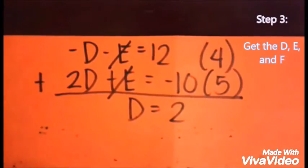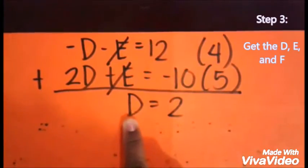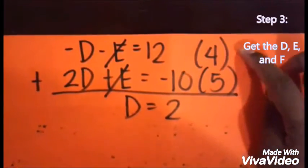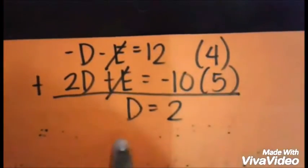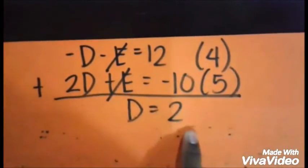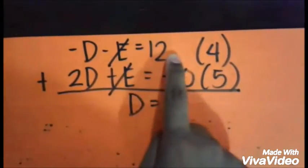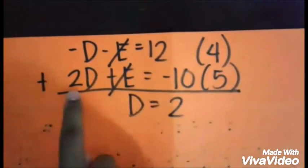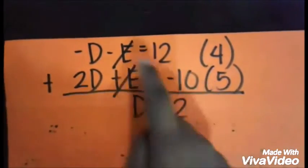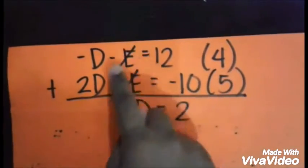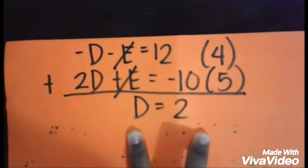Using Equations 4 and 5 together, you can now solve for d. From -d - e = 12 and 2d + e = -10, the e terms cancel and you get d = 2.